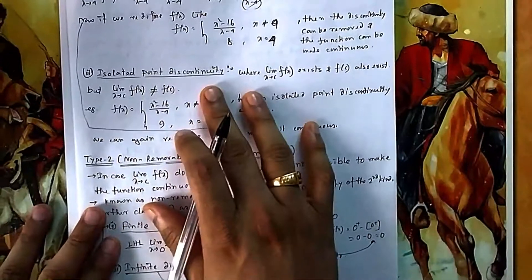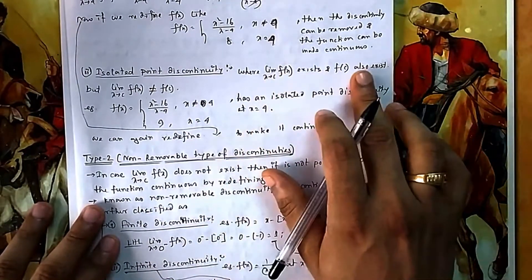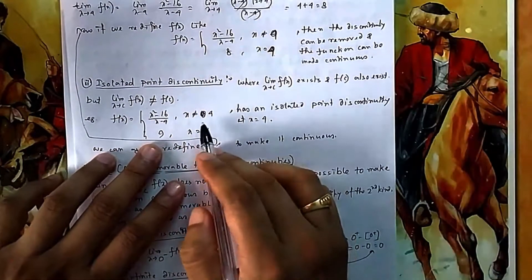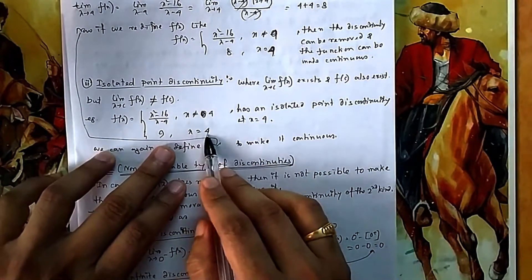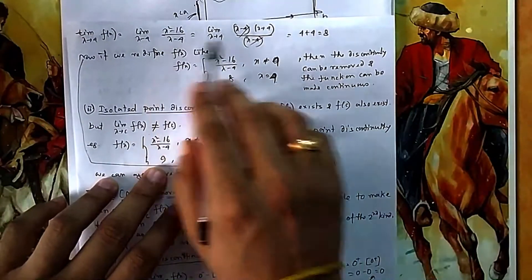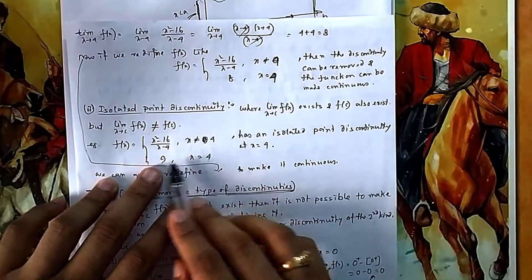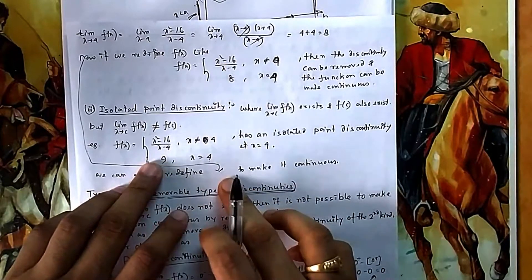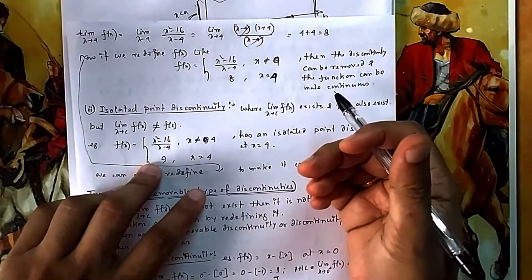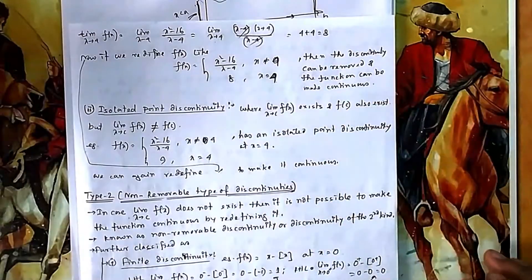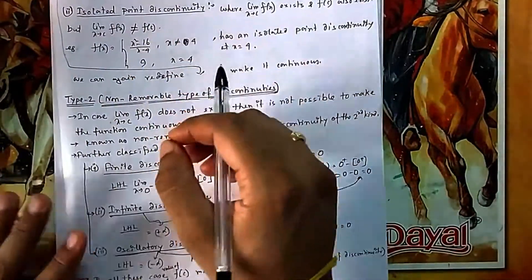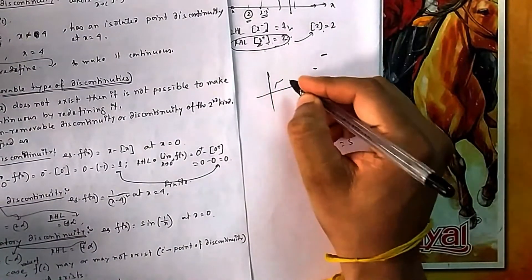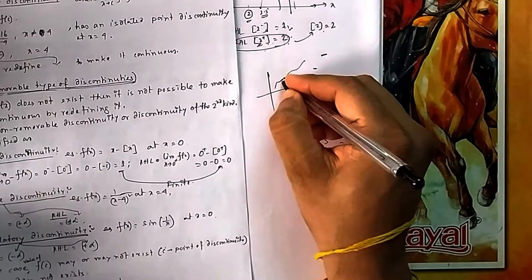The next sub-case is isolated point discontinuity. Here, f(c) exists but is not equal to the limit. For example, the same function at x = 4 where the limit is 8, but f(4) = 9. Since the limit and the function value are not equal, it has isolated discontinuity at x = 4. You can redefine the function by changing 9 to 8, making it continuous — that's why it is also a removable discontinuity.